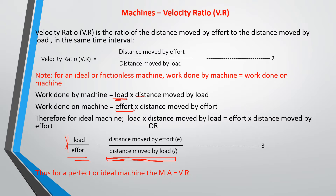Remember that load over effort equals mechanical advantage. So for an ideal or perfect machine, mechanical advantage equals velocity ratio. But this situation hardly applies — you rarely have a perfect machine. We are now going to look at the efficiency of a machine.